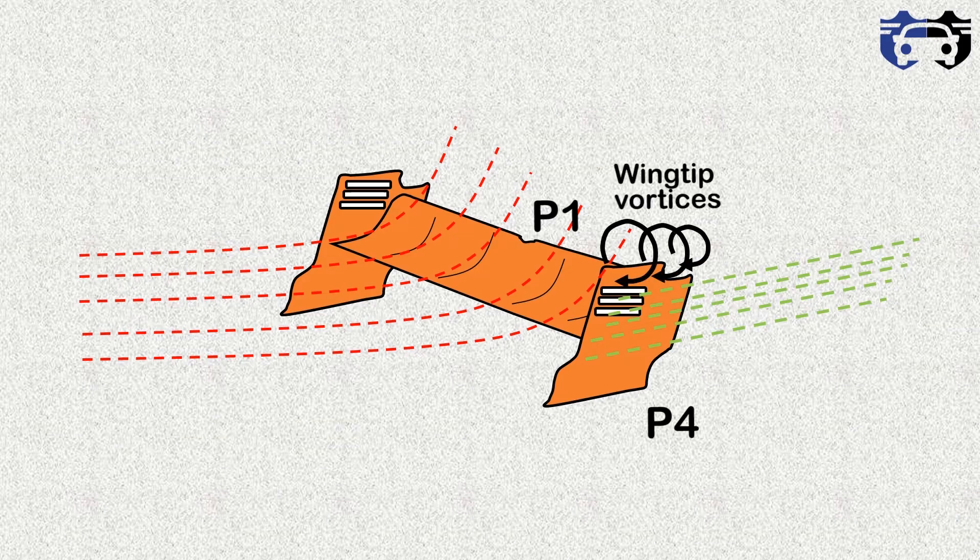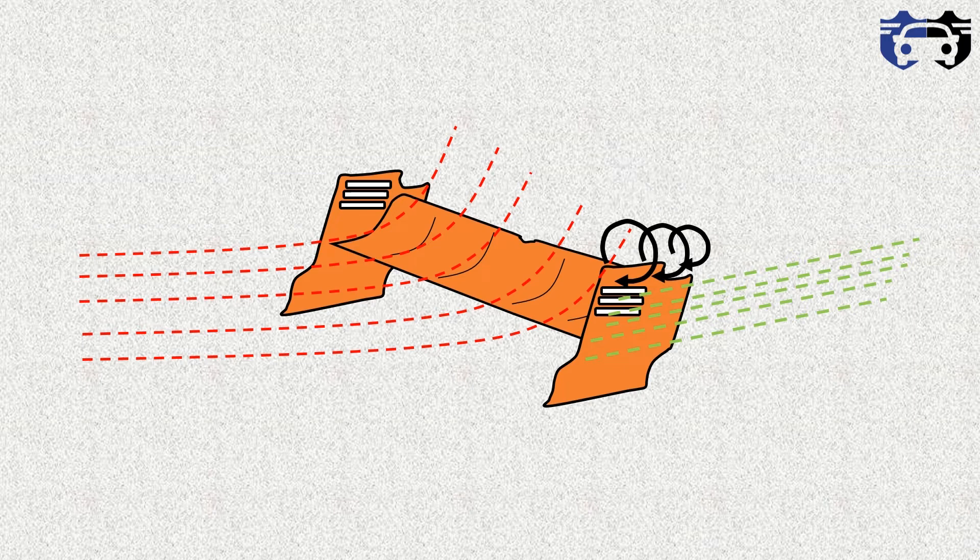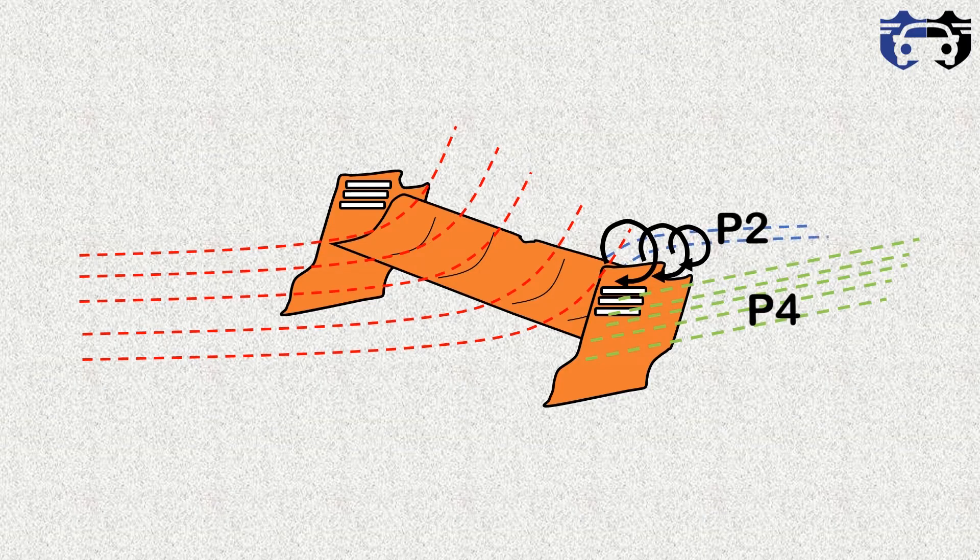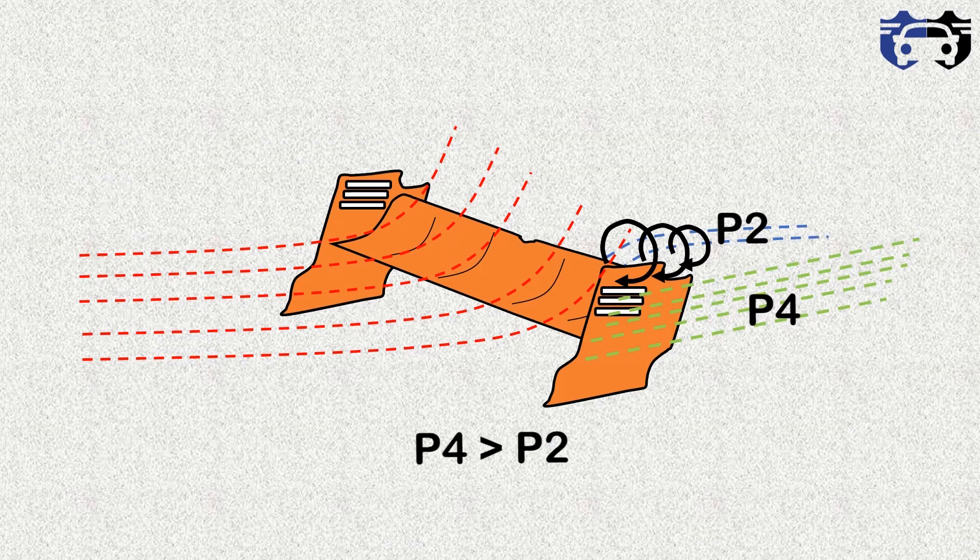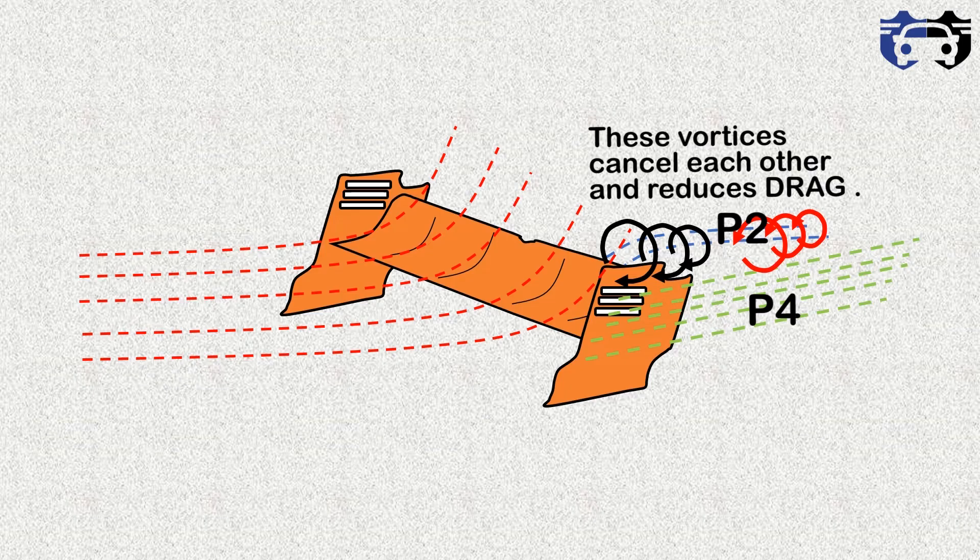Now preventing this too, the cuts at the end of the plates are also made. The pressure outside is P4 and the pressure at the bottom is P2. As the P4 is greater than P2, it will generate the vortices but in opposite direction and cancelling the previous vortices. So this is how the wing generates downforce for the better traction and grip.